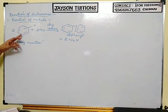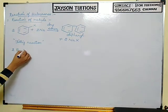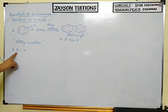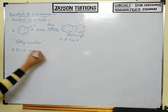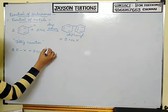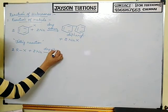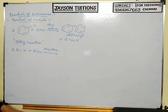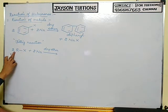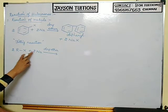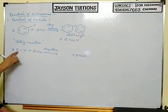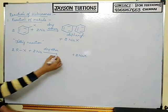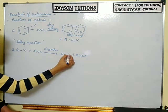Now, instead of halo-arene, if I take halo-alkane, there is no benzene ring — instead there is an alkyl group, RX. I react it with sodium in the presence of dry ether. The 2X and 2 sodium combine to form 2NaX, and the two R groups combine to form R-R.